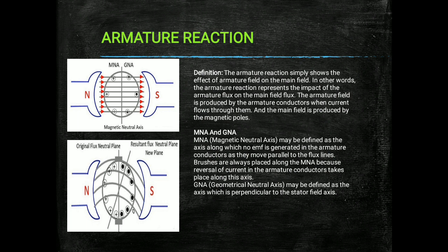The armature field is produced by the armature conductor when current flows through them, and the main field is produced by the magnetic poles — that means the pole pair, that is, north pole and south pole. The magnetic lines of force are produced between the north pole and south pole.